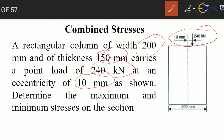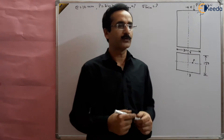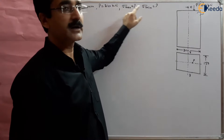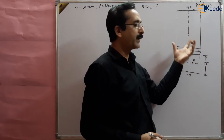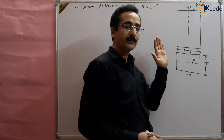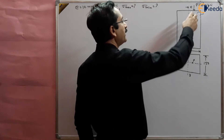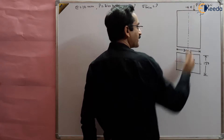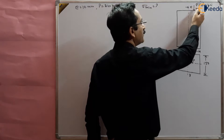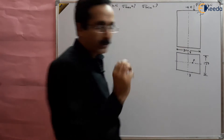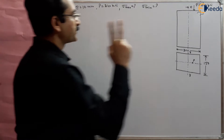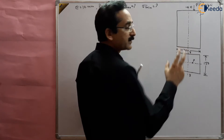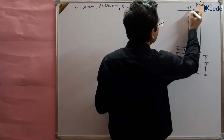We need to find the maximum and minimum stresses. There will be two types of stresses: direct stresses and bending stresses. This is a combined bending and direct stress problem because the load is applied eccentric to the axis. Due to this eccentricity, two types of stresses will be developed.